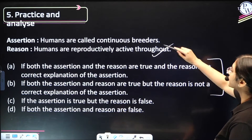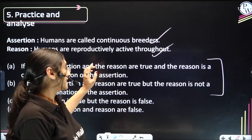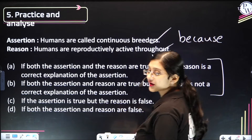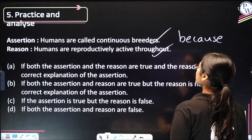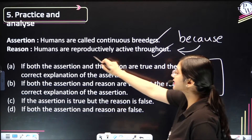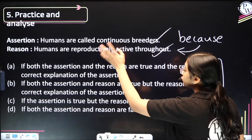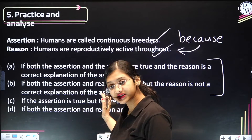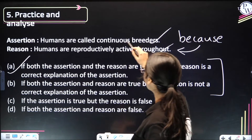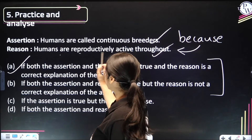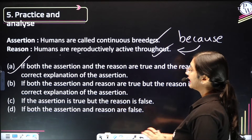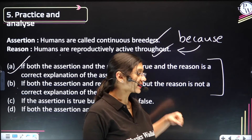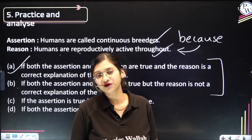Both statements are correct, so the confusion is whether the answer is option A or B. I apply the 'because' trick: 'Humans are called continuous breeders because humans are reproductively active throughout.' That makes perfect sense, so the answer is definitely option A — the reason correctly explains the assertion. If I still get confused between A and B, it means my method is not applied correctly.